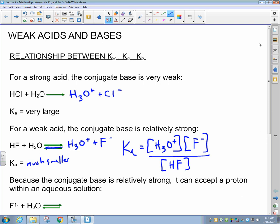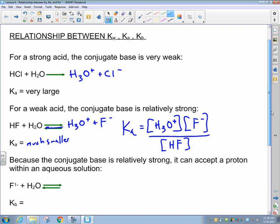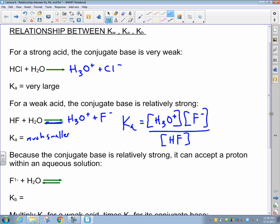Because the conjugate base is relatively strong, it will react with the water that it surrounds and have a secondary chemical reaction that occurs in that solution as well. Now the fluoride ion is going to act as a base.